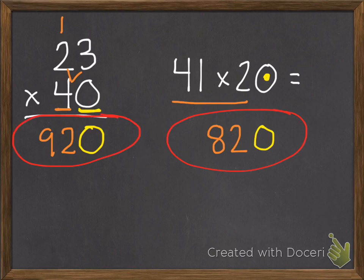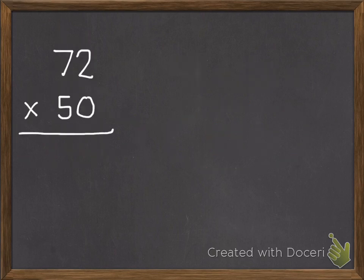Here's my second example. Once again, we start with our ones. And zero times 72 is zero. So we have zero ones. Then we move over to our tens place value. Five times 2 is 10. Five times 7 is 35. Five plus that extra one makes 36. And our answer is 3,600.